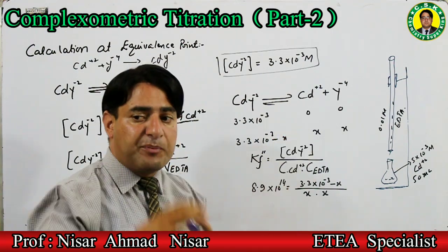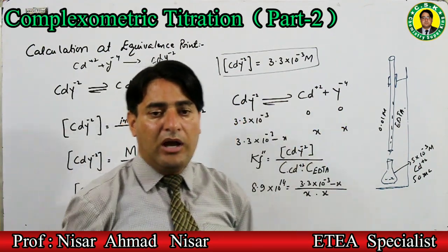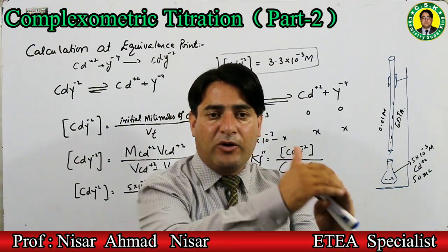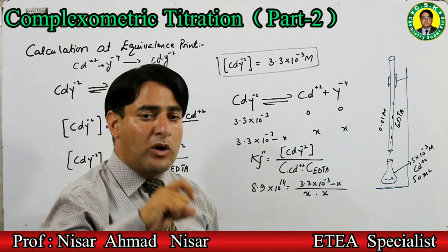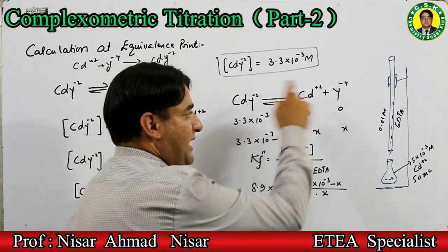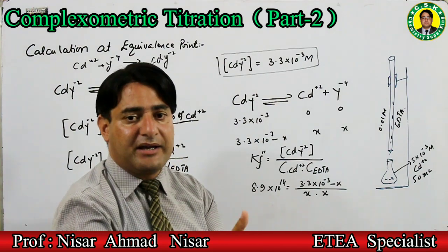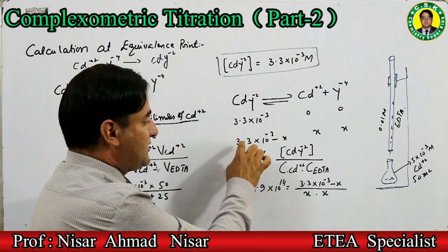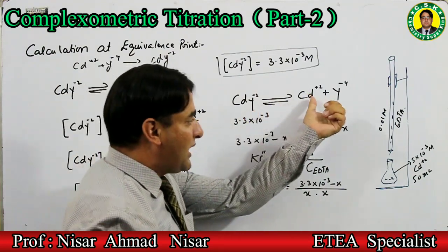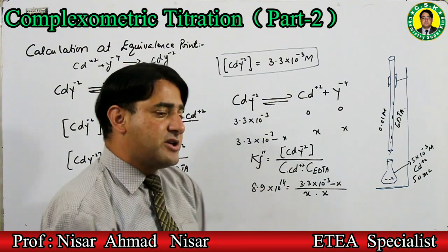ابھی complex dissociate نہیں ہوا، تو cadmium ion اور EDTA ion کی concentration zero ہوگی۔ جب complex dissociate ہوگا، let x mol/L complex dissociate ہو۔ ایک mole سے ایک cadmium ion اور ایک EDTA ion بنتا ہے۔ اگر x mol dissociate ہوگا تو x mol cadmium ion اور x mol EDTA ion بنے گا۔ Complex کی equilibrium concentration = 3.3×10⁻³ − x۔